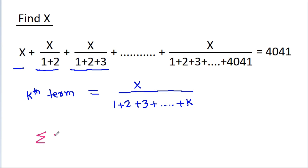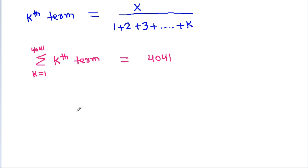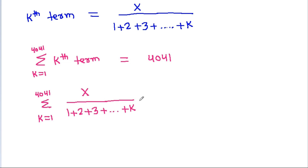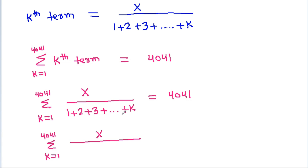And we have given the summation of the kth term from k equal to 1 to 4041 is equal to 4041. That is, summation from k equal to 1 to 4041 of x by 1 plus 2 plus 3 up to k, and since 1 plus 2 plus 3 up to k equals k times k plus 1 by 2, this gives us x divided by k(k+1)/2, equal to 4041.